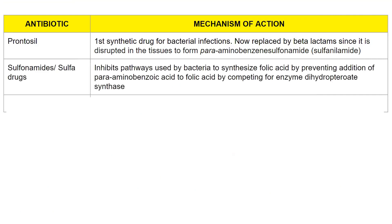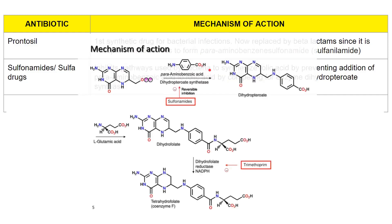Next are the sulfonamides, or sulfa drugs. They inhibit the synthesis of folic acid by preventing the addition of para-aminobenzoic acid to folic acid. The enzyme that carries out this conversion is dihydropteroate synthase, which is inhibited by sulfonamides, ultimately blocking the folic acid synthesis cycle.